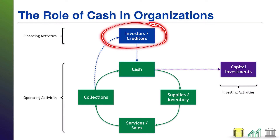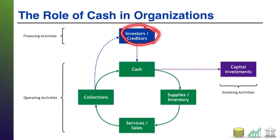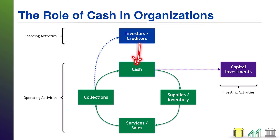It all starts with either investors or creditors. Investors buy equity in a company — they give the company cash in exchange for ownership, in exchange for stock. Creditors simply lend the company money; they give the company cash, but they expect to be paid back. It's just a loan. Either way, both of these parties are going to give cash to the company.